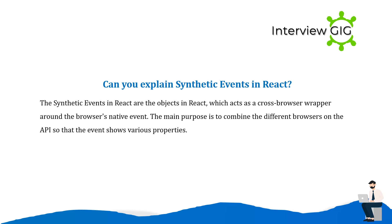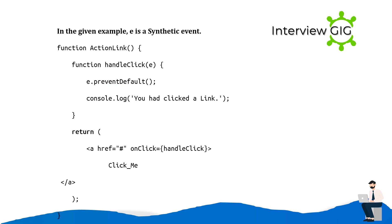Can you explain synthetic events in React? Synthetic events in React are objects which act as a cross-browser wrapper around the browser's native event. The main purpose is to combine different browsers' APIs so that the event shows consistent properties. In the given example, 'e' is a synthetic event: function ActionLink() { function handleClick(e) { e.preventDefault(); console.log('clicked'); } return <a onClick={handleClick}>Click me</a>; }